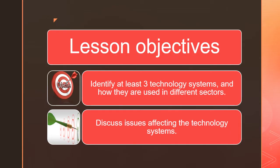The lesson objectives for today: one, we're going to identify at least three technology systems and how they are used in different sectors. The second one is that we're going to discuss issues affecting the technology systems.